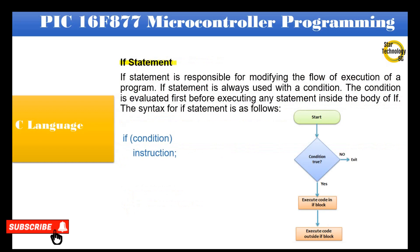The if statement is responsible for modifying the flow of execution of a program. The if statement is always used with a condition. The condition is evaluated first before executing any statement inside the body of if. The syntax is: if (condition) { instruction }. As shown in the block diagram: if the condition is true, execute the code; if the condition is not true, exit from the loop.